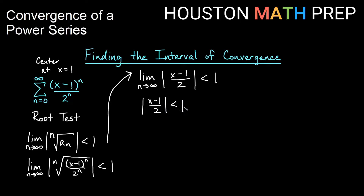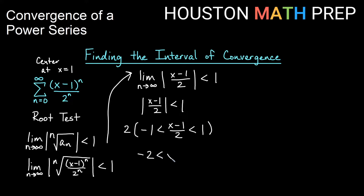Absolute value less than 1 means the expression is between negative 1 and positive 1. So (x minus 1) over 2 is between negative 1 and positive 1. To solve for x, I first multiply everything by 2 to get negative 2 is less than (x minus 1) is less than 2. Then I add 1 to all three parts to get negative 1 is less than x is less than 3.